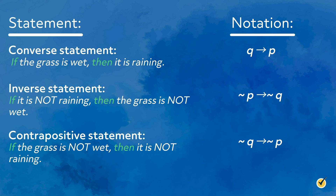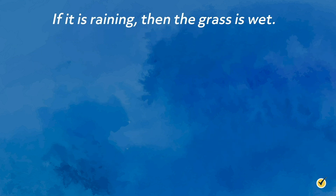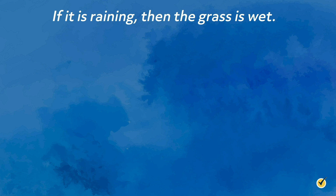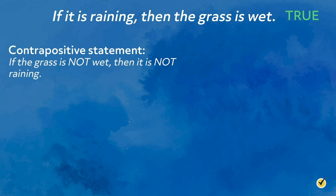You may be wondering why we would want to go through the trouble of rearranging and considering the opposite of the hypothesis and conclusion statements. The key is in the relationship between the statements. If we know that a statement is true or false, then we can assume that another is also true or false. The statements that are related in this way are considered logically equivalent. For example, if we consider the statement 'if it is raining, then the grass is wet' to be true, then we can assume that the contrapositive — 'if the grass is not wet, then it is not raining' — is also true.